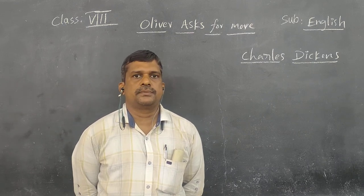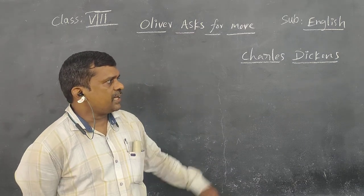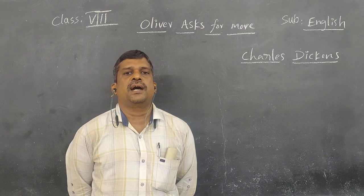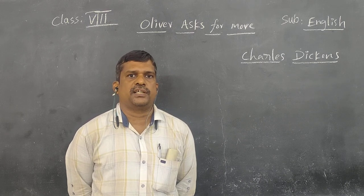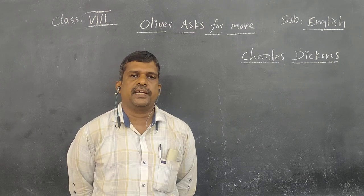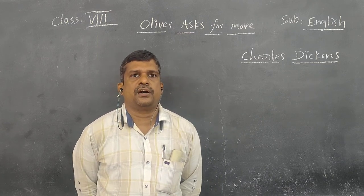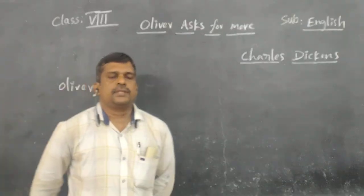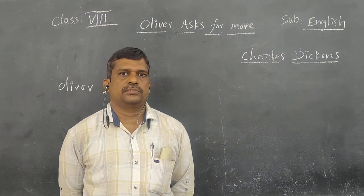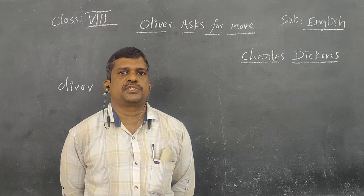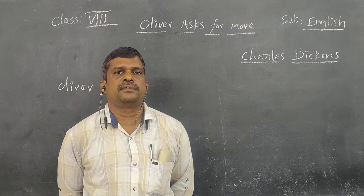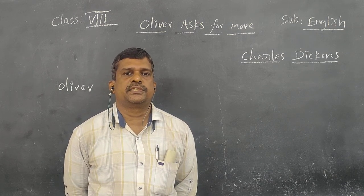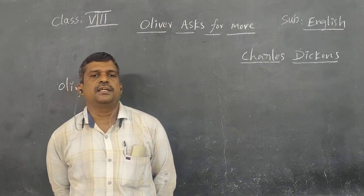Let us come to the lesson part. It is all about an orphan boy. An orphan is a person who does not have parents — no mother, no father, that is an orphan. This lesson is all about an orphan boy named Oliver, who is brought to a children's home. Since he does not have parents, he is brought to a children's home. People who don't have a mother and father to look after them are brought to these orphanages.